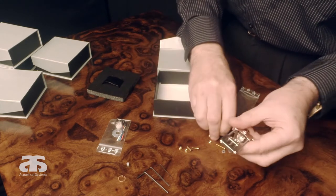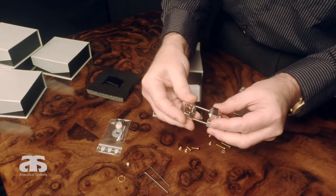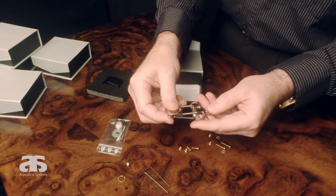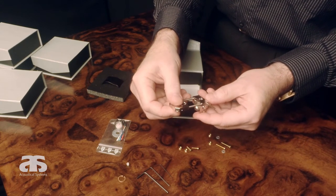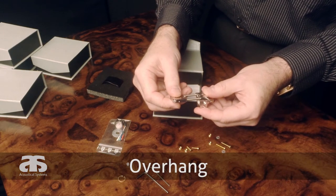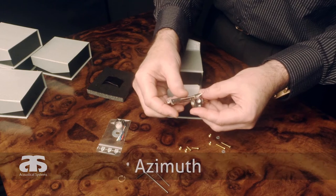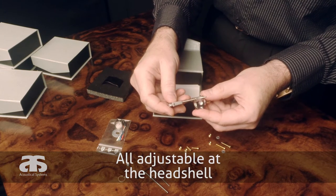What makes the Arche stand apart and far ahead of all its competition and all other head shells on the market? The Arche is the only one to offer all alignments: offset, overhang, SRA, VTA and azimuth, all at the head shell, all at the spot.